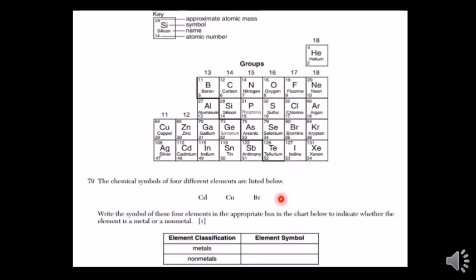Br is bromine, and P is phosphorus. The task is to write the symbols of these four elements in the chart, indicating whether they are metal or non-metal.